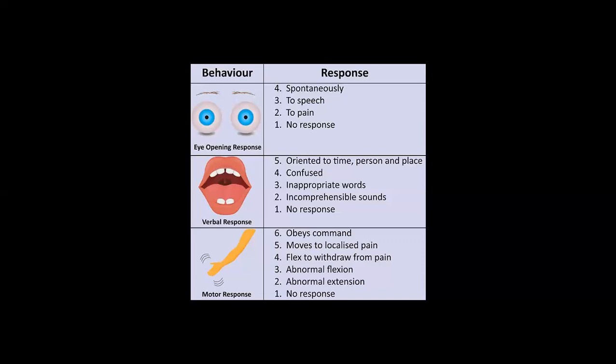So, these three things — eye opening, verbal response, and motor response — are what you assess. I hope you understand how to determine the patient's level of consciousness using GCS. Thank you.